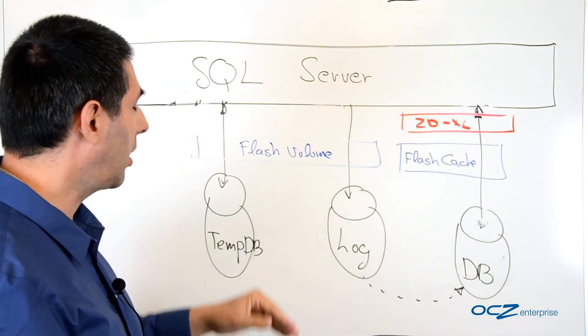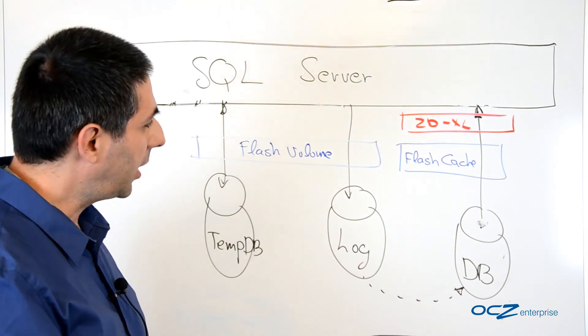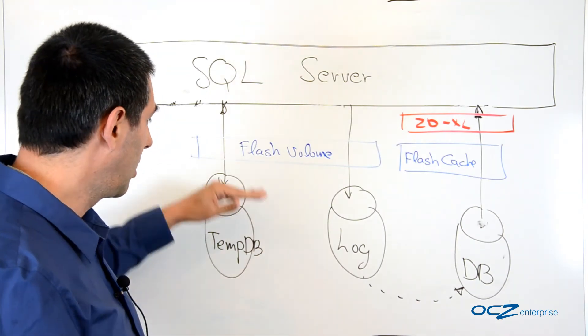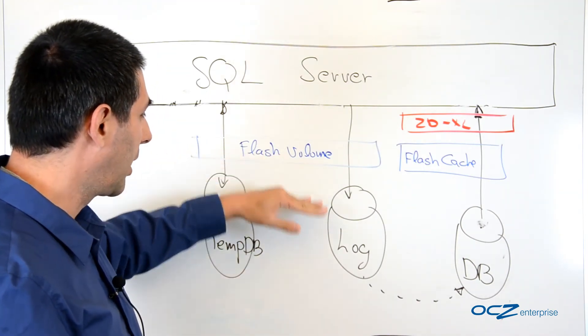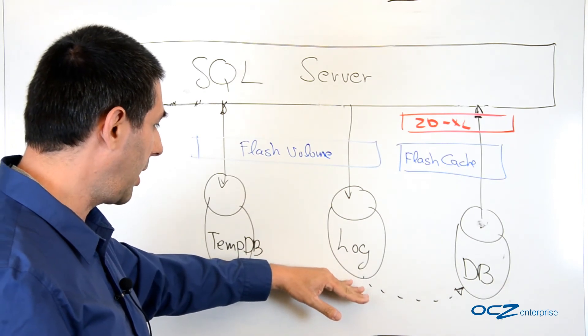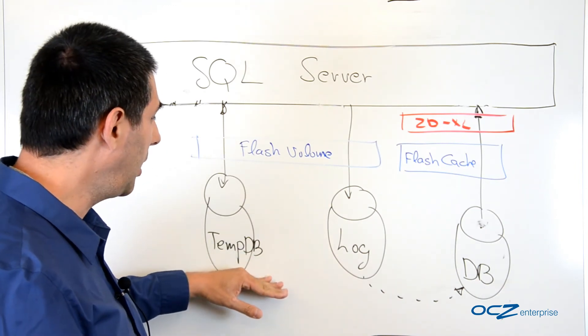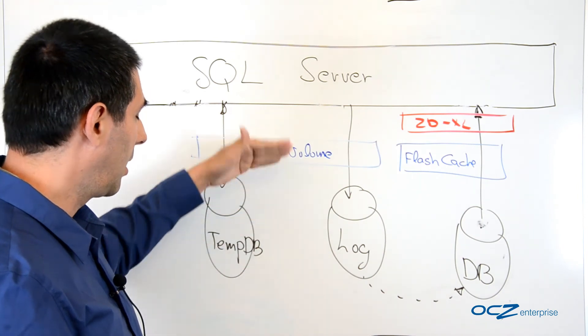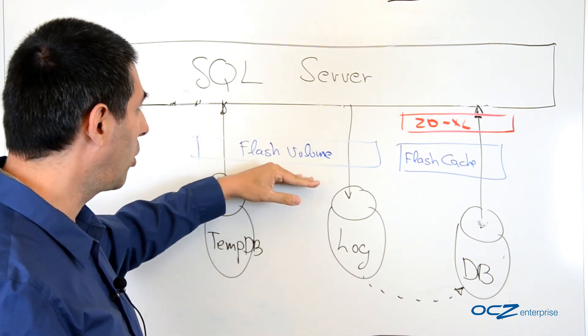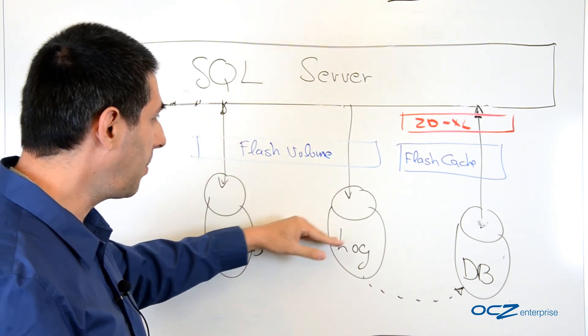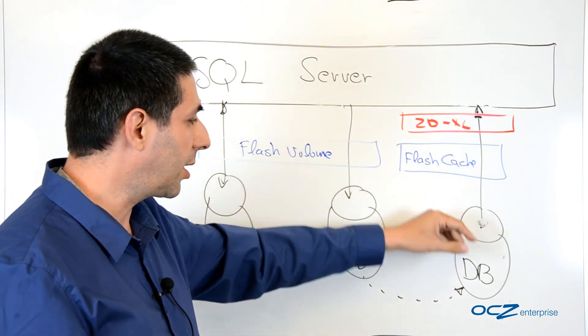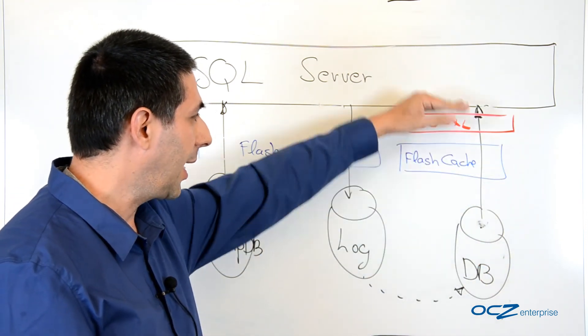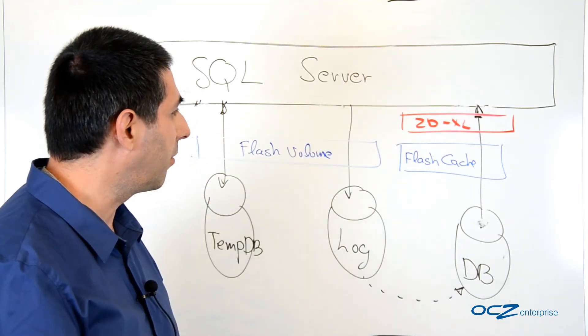To conclude, we have here an optimized solution that has the best of both worlds: a flash cache, a flash volume that has the log and the tempdb, and hence has the performance of the flash volume for these data types, and a flash cache that uses the hot areas of the database and caches it toward the SQL server.